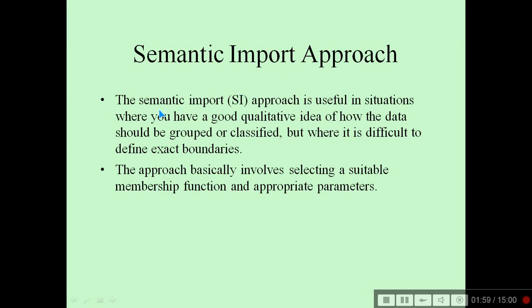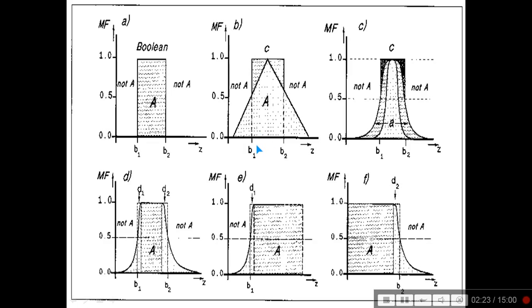The semantic import (SI) approach is useful in situations where you have a good qualitative idea of how the data should be grouped or classified, but where it is difficult to define exact boundaries. The process basically involves selecting a suitable membership function and appropriate parameters. We have certain Boolean values and certain intermediate values, with various combinations and permutations possible.